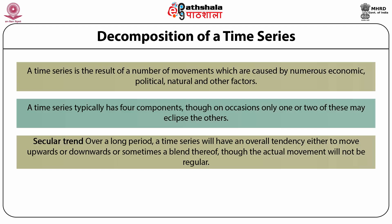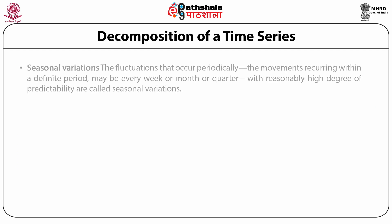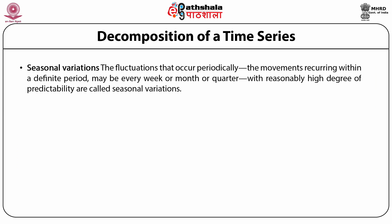For example, a glance at sales of a popular soft drink manufacturer is likely to reveal an increasing trend, but this may not always be true. Second is seasonal variations — fluctuations that occur periodically, recurring within a finite period such as every week, month, or quarter, with a reasonably high degree of predictability. For a soft drink manufacturer, while yearly sales may be on the increase, sales are likely to be high every summer and lower in winter due to the effect of the season.